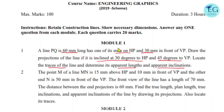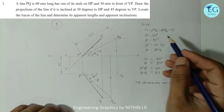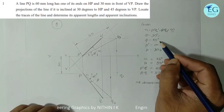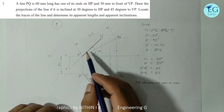One point and its position with respect to HP and VP are given. That means true length and inclination with HP and inclination with VP are given. So the rotating line method is used for this problem. We also need to find the traces of the line. The true length is 60mm, theta equals 30 degrees, phi equals 45 degrees, and P-dash lies on the XY line.